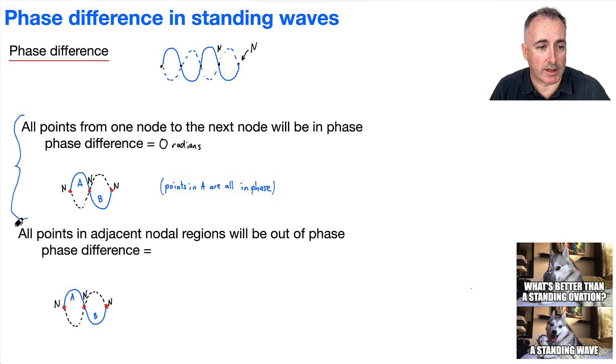Now what about things that are out of phase? Points in A are in phase with each other, and points in B are in phase with each other. But points in A are not in phase with the points in B. In fact, we say they're out of phase.